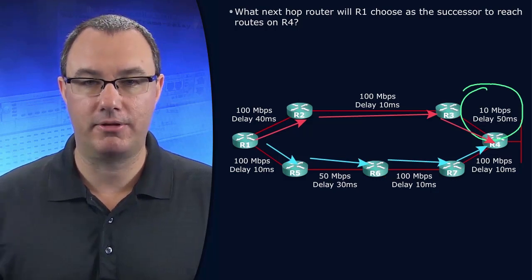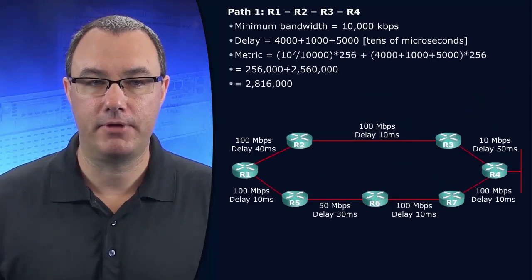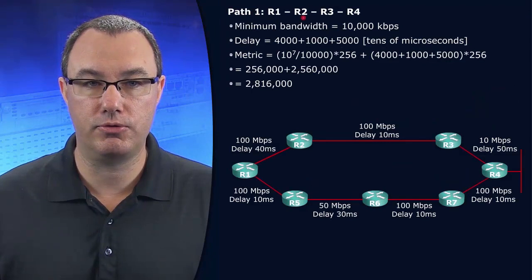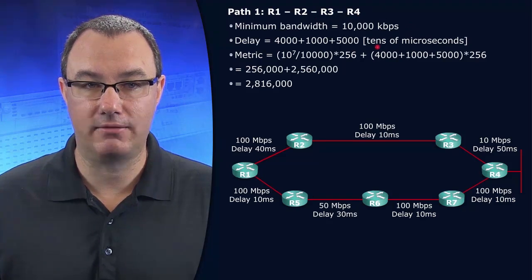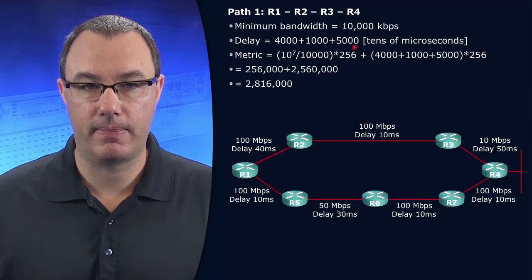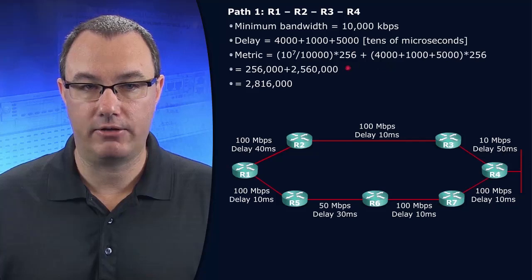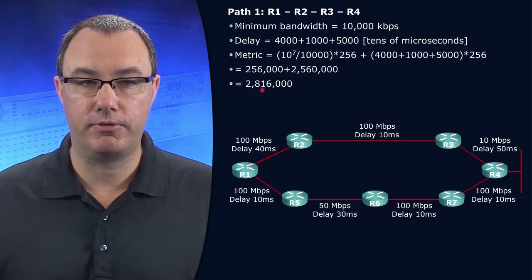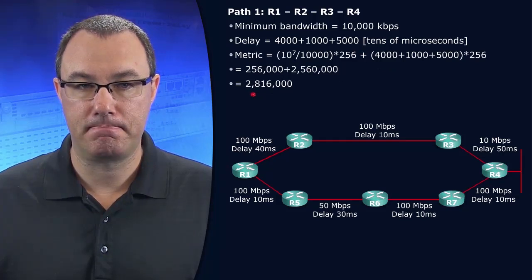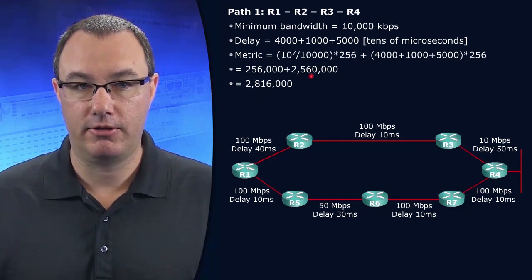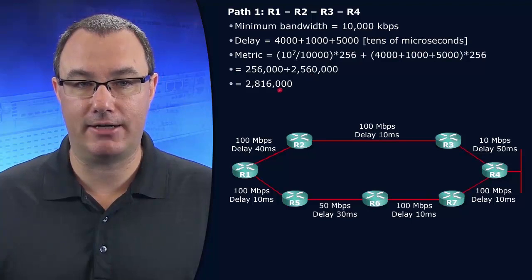Don't believe me? Let's back up the example with some math. The top pathway — R1, R2, R3, R4 — has a minimum bandwidth of 10 megs. And it has a delay of about 10,000. So if we do the math here — and we're not going to do the math together — you can see that the top pathway has a metric of about 2.8 million. Notice how much larger of an impact the bandwidth component is to this overall value.